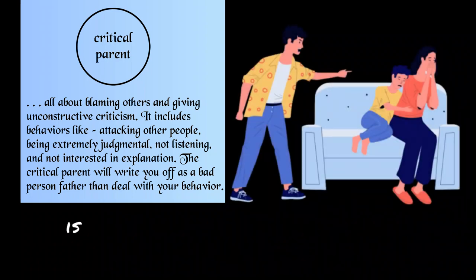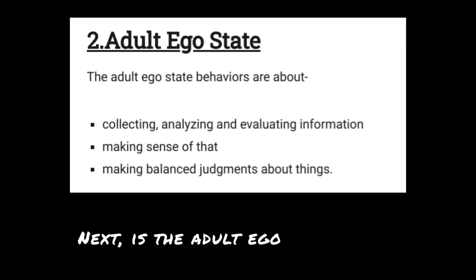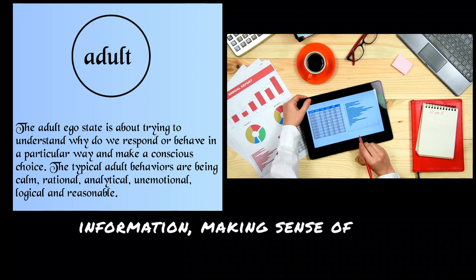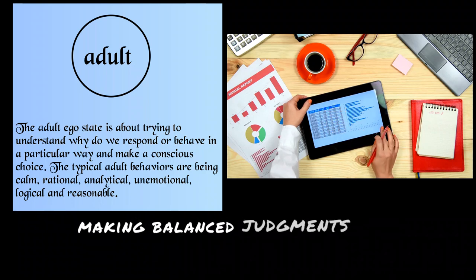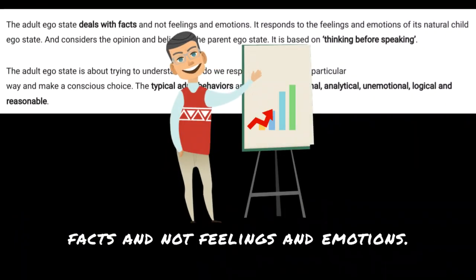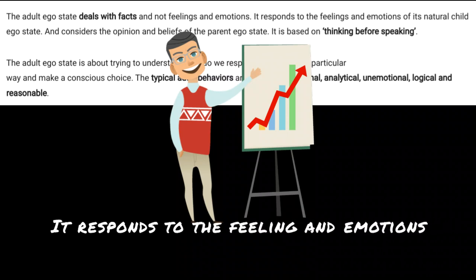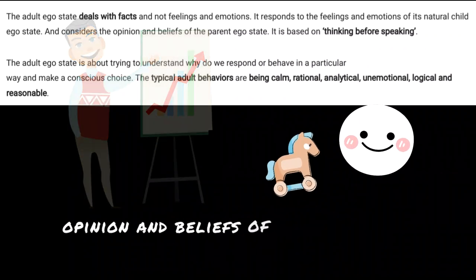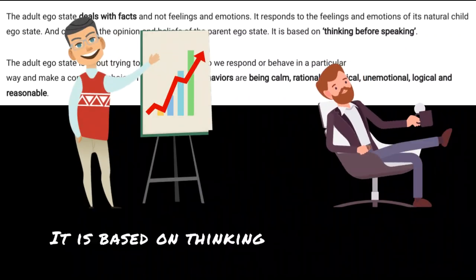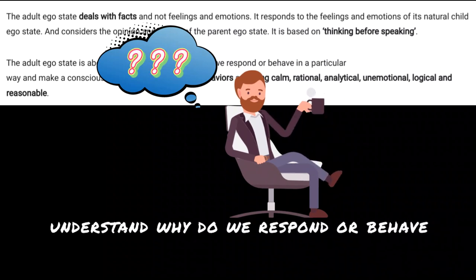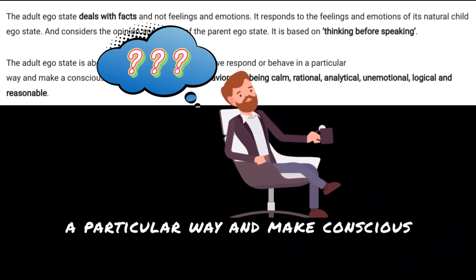I'm pretty sure this is where the narcissist lives most of the time. Next is the adult ego state, where behaviors are about collecting, analyzing, and evaluating information, making sense of it, and making balanced judgments. The adult ego state deals with facts and not feelings and emotions. It responds to the feelings of its natural child ego states and considers the opinions of the parent ego state. It is based on thinking before speaking and is about understanding why we respond or behave in a particular way and making conscious choices.